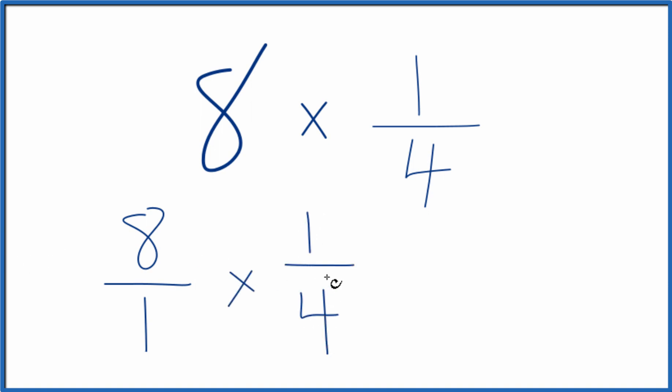When we multiply fractions, we multiply the numerator and then the denominator. So we multiply eight times one and that gives us eight, then one times four. That gives us four.